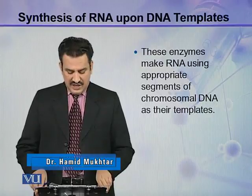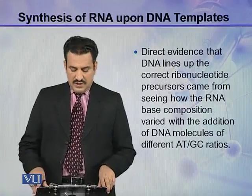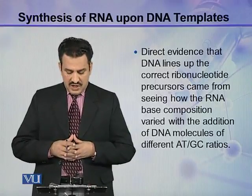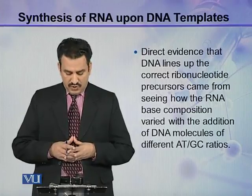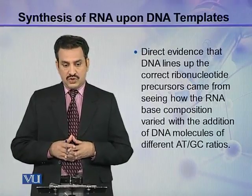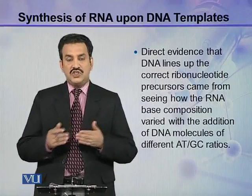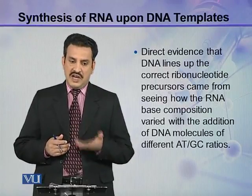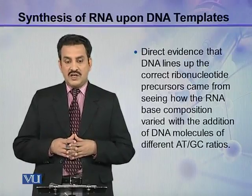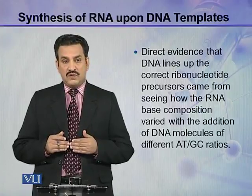These enzymes make RNA using appropriate segments of chromosomal DNA as their templates. Direct evidence that DNA lines up the correct ribonucleotide precursors came from observing how the RNA base composition varied when DNA molecules of different ATGC ratios were added. If DNA with different ATGC ratios was used to synthesize mRNA, the ATGC ratio of DNA was found to correspond to the AUGC ratio of the resulting RNA.